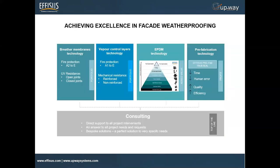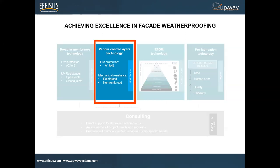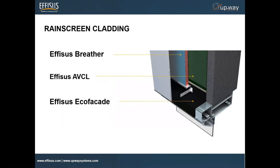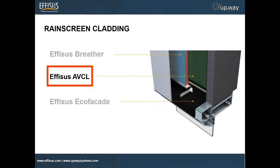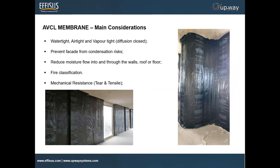Today we will focus on the interior part of your facade. We have a wide range of technologies in our company, from breather membranes to vapor membranes to EPDM membranes. Today we focus on vapor control layer technology. Our fire protection portfolio goes from A1 to E, and in terms of mechanical resistance we have reinforced and non-reinforced membranes. This is a typical rain screen cladding scheme: breather membrane on the outside in blue, AVCL membrane on the inside in green, and at the interfaces our Ephesus Echo Facade EPDM solution.